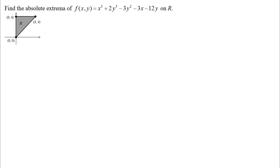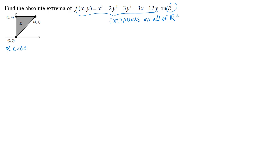We're going to look at an example where we find the absolute extrema of a function on a given region R. Before we jump in, I want to think about what the theorems tell us. This function is a polynomial function, continuous everywhere on all of R2, and therefore continuous on the region R. Our region R is closed — all boundary points are included — and it is a bounded region; it does not go off to infinity. So we have a continuous function on a closed and bounded region.